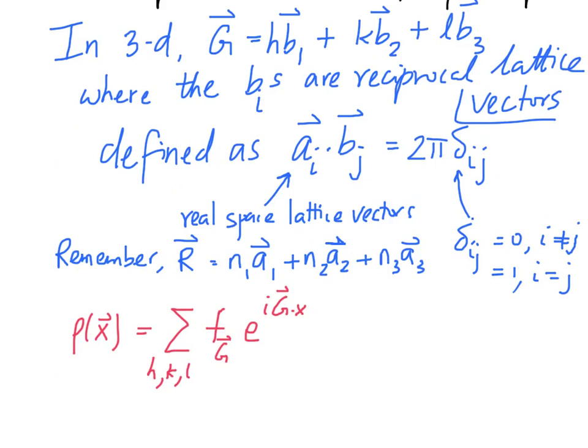And, of course, the g vector is defined at the top of this screen. So, ρ is the real space representation of our charge density whereas f is the reciprocal space representation of our charge density. ρ is a continuous function of x whereas f is defined only at the allowed reciprocal space points G.